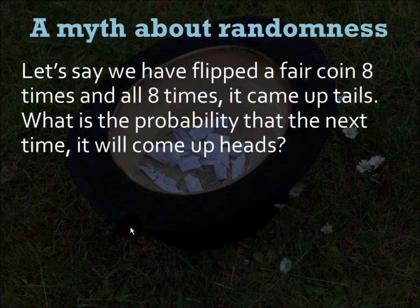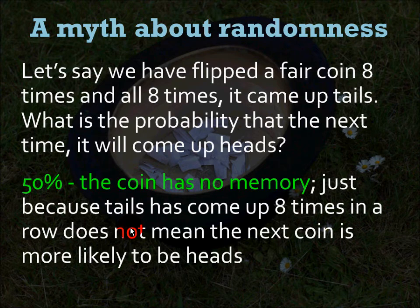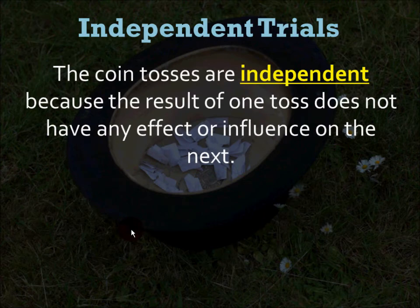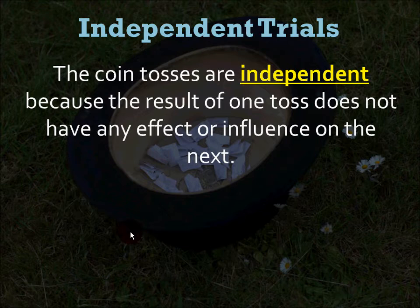Here's a myth about randomness. Let's say we have flipped a fair coin eight times and all eight times it came up tails. What is the probability that the next time it will come up heads? All of you know that the coin has no memory — it is a 50% chance. Just because tails has come up eight times in a row does not mean the next flip is more likely to be heads. Coin tosses are independent because the result of one toss does not affect or influence any subsequent toss.